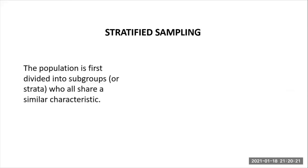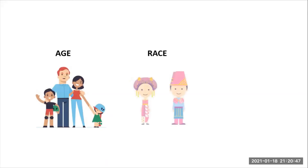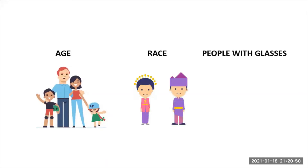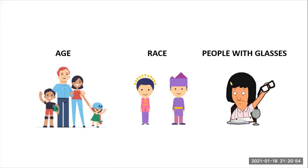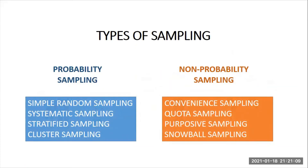The last probability sampling method is stratified sampling. In this method, the population is first divided into subgroups called strata, which all share similar characteristics. It is used when we might reasonably expect the measurement of interest to vary between the different subgroups and we want to ensure representation from all of them. Strata may include age, race, nationality, or even specific traits like people with glasses. For example, in a study of ICT students, we may stratify the population by sex or gender to ensure equal representation of male and female. The study sample is then obtained by taking equal sample sizes from each stratum.